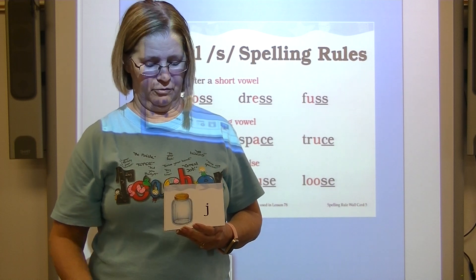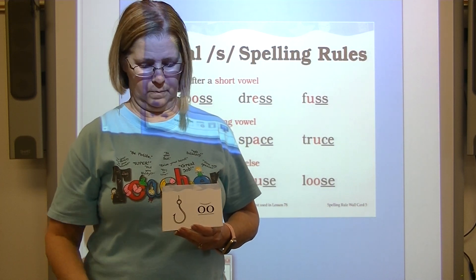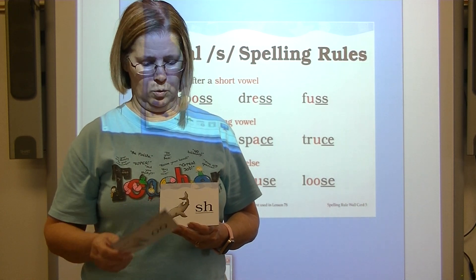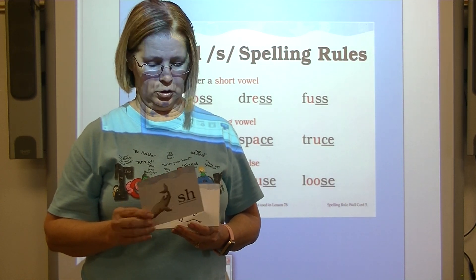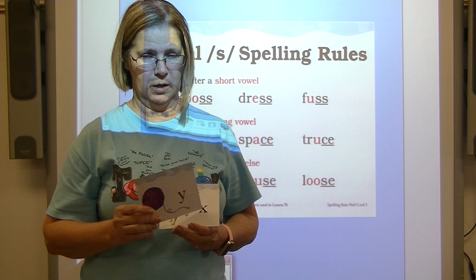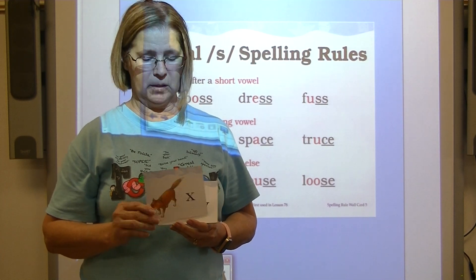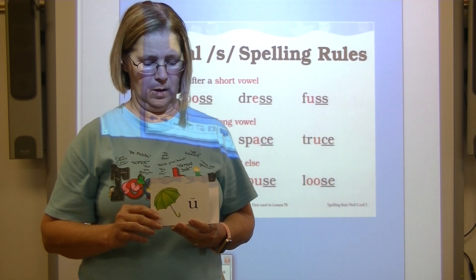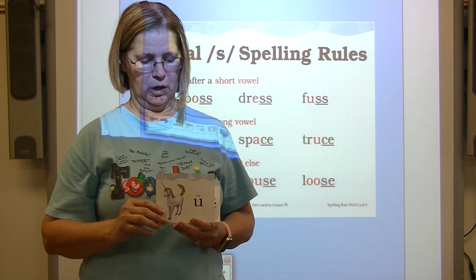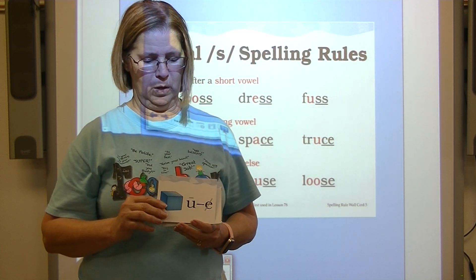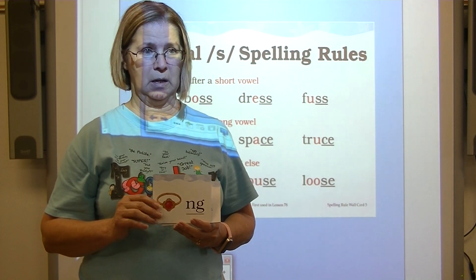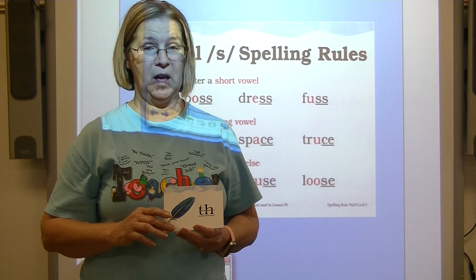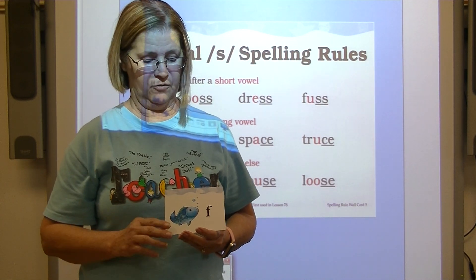Vest — J; jar — J; hook — OO; tooth — OO; shark — SH; yarn — Y; fox — X; wagon — W; umbrella — short U; unicorn — long U; cube — long U; ring — NG; thimble — TH; feather — TH; fish.